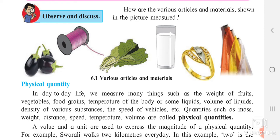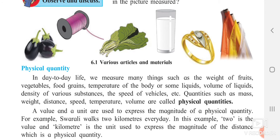A value and a unit are used to express the magnitude of a physical quantity. Magnitude can be shown in the form of a value and a unit. For example, 5 km — 5 is the value and km is the unit. Magnitude means the size of it, what it actually contains.